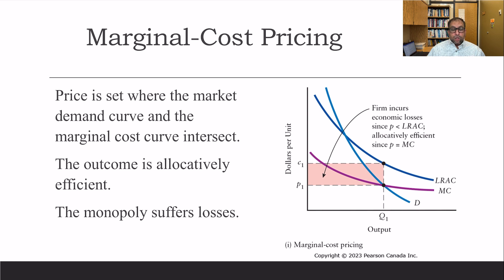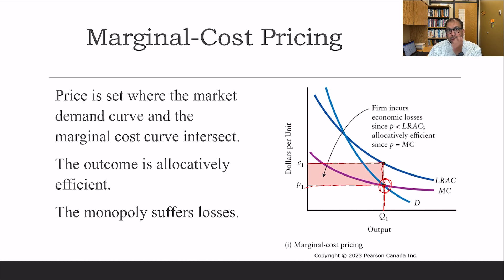With marginal cost pricing, we set the quantity where demand equals marginal cost. The price is determined by the demand curve, and the cost of producing that quantity means firms are always in a loss situation. The outcome is allocatively efficient — price is set where the market demand curve and marginal cost curve intersect — but monopolies suffer losses in that case.